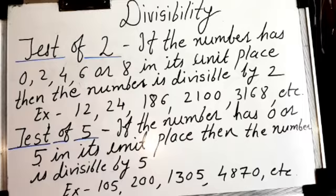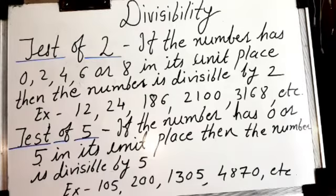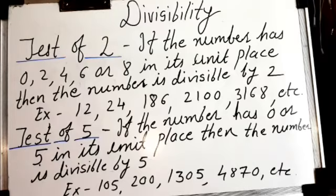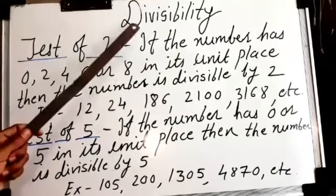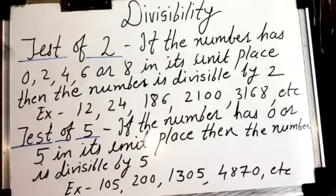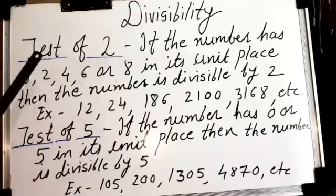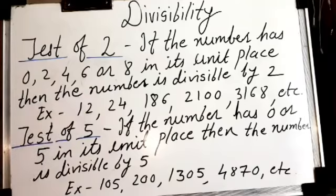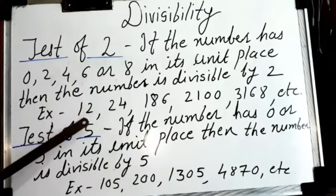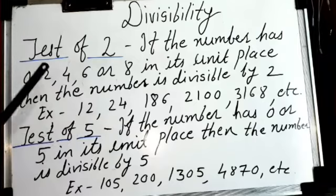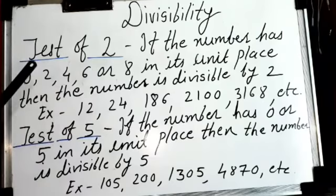In fifth standard you have already learned about the divisibility test of two, five, and ten, so let us revise that. What does divisibility mean? We have to decide whether any number is divisible by a particular digit or number. For small numbers, like twelve, we can say twelve is divisible by two because twelve comes in the table of two.